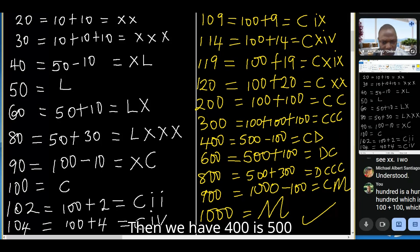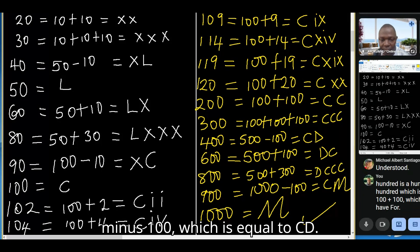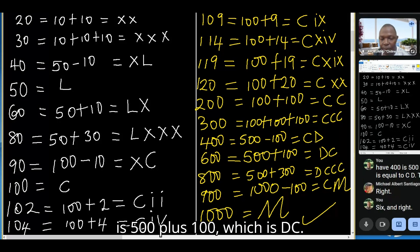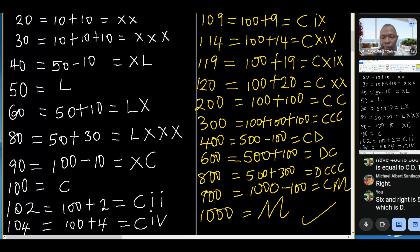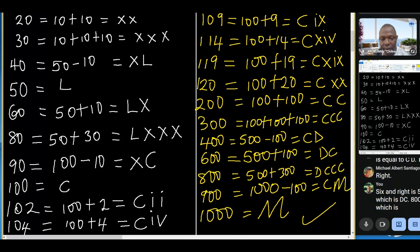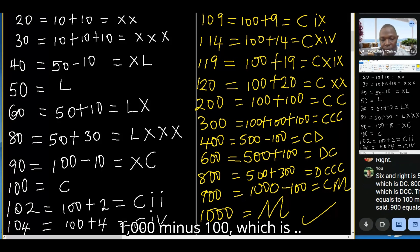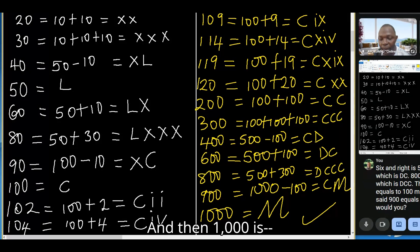Four hundred is 500 minus 100, which equals CD. Six hundred is 500 plus 100, which is DC. Eight hundred is 500 plus 300, which is DCCC. Nine hundred equals 1000 minus 100, and one thousand is M.